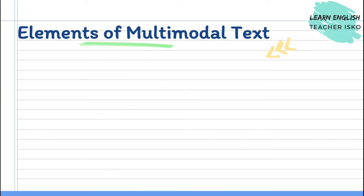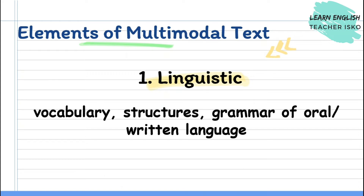The first element of multi-modal text is linguistic. This includes vocabulary, structures, and the grammar of both oral and written language. Linguistic is not always the most important mode — this depends on the other modes at play in the text. However, this is probably the most widely used element because it can be both read and heard on both paper and radio.